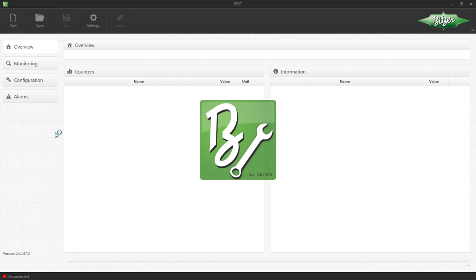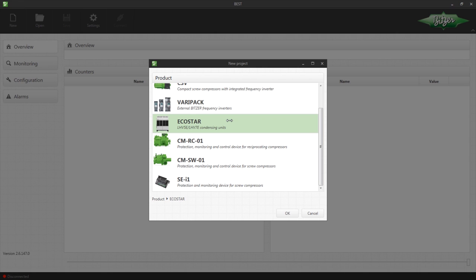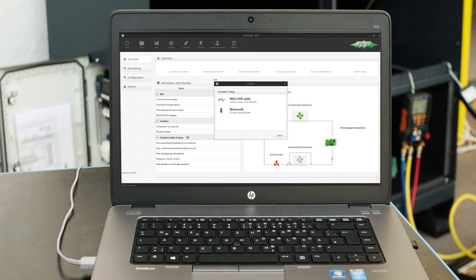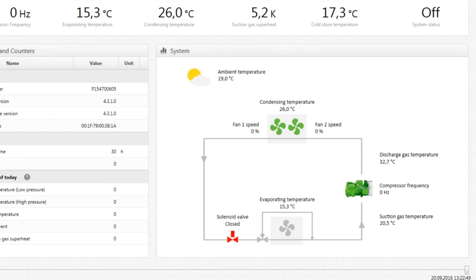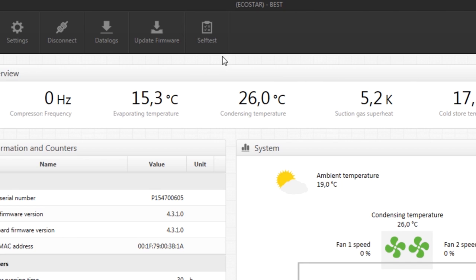Open the Best software and select new. Select echo star. Connect with the echo star via a USB cable or Bluetooth. All the key parameters can be viewed directly in the menu item Overview. A system diagram displays the operating status of individual components.